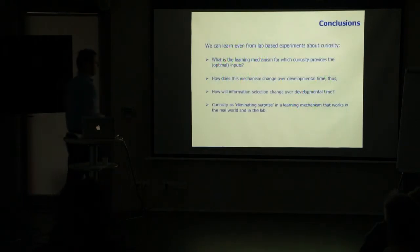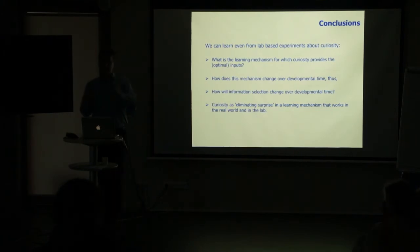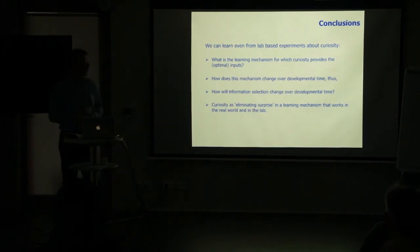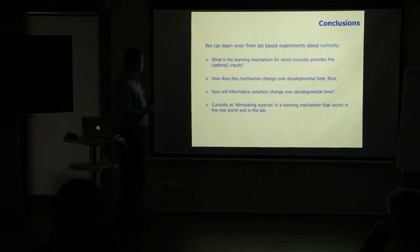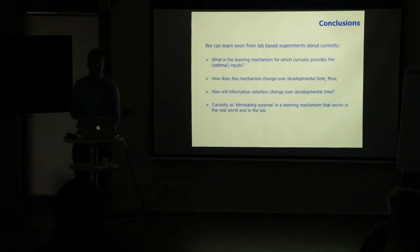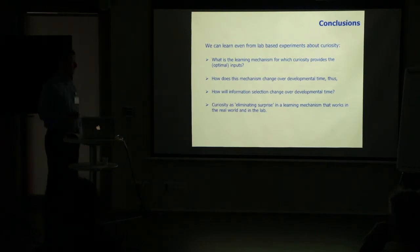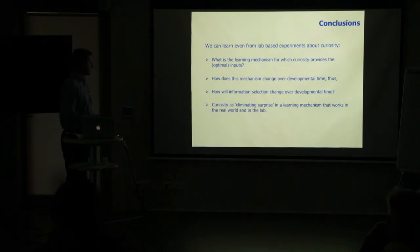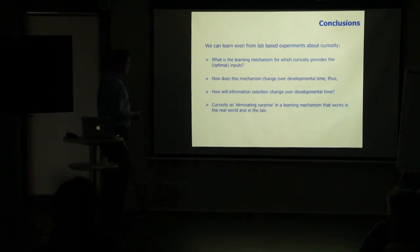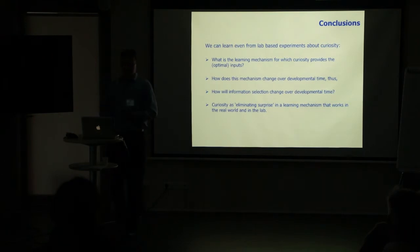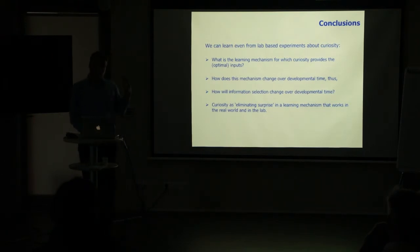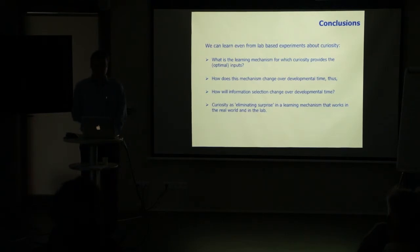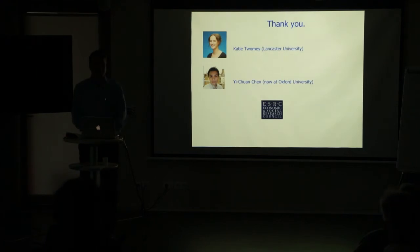In conclusion, what can we learn from closely controlled lab-based looking time experiments about curiosity? We can learn what the learning mechanism is for which curiosity provides optimal inputs, and how this learning mechanism changes over development — and therefore how information selection will change over development. If we consider curiosity as eliminating surprise through a learning mechanism, these simple, well-controlled studies can provide meaningful answers.